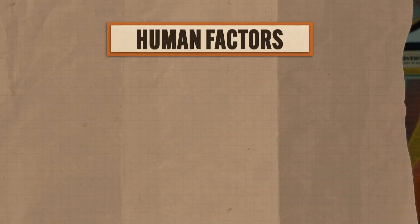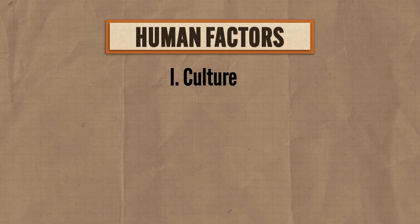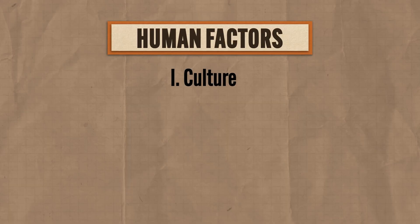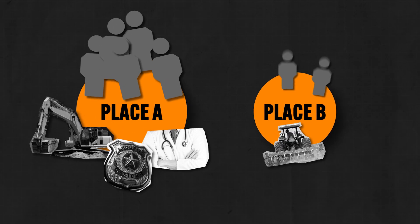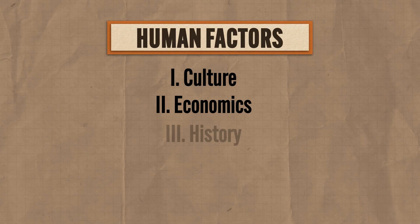The second set of factors that affect population distribution are human factors. Under this heading, we could consider culture — populations can be found in greater concentrations where cultural amenities like education and healthcare are more accessible. Also, we can consider economics: people tend to settle where they can make a living, where resources and jobs are abundant. If there are a lot of jobs in a place, more people tend to live there, and if there are fewer jobs, fewer people tend to live there. History also falls under human factors — where populations were distributed in the past can have a strong influence on where they exist in the present.